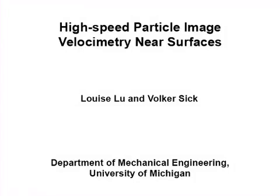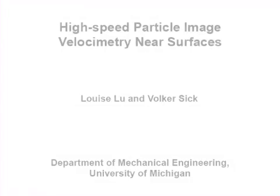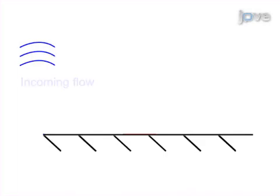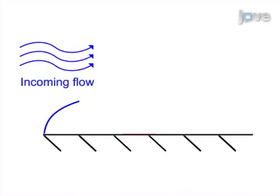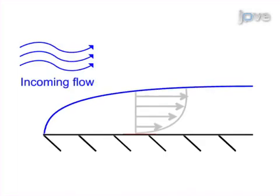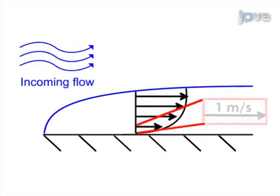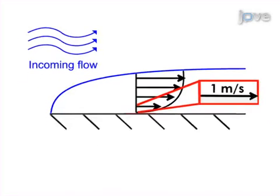The overall goal of this video is to demonstrate how to set up and operate a benchtop particle image velocimetry experiment. First, estimate the recording parameters needed to resolve the velocities and gradients expected in the flow.